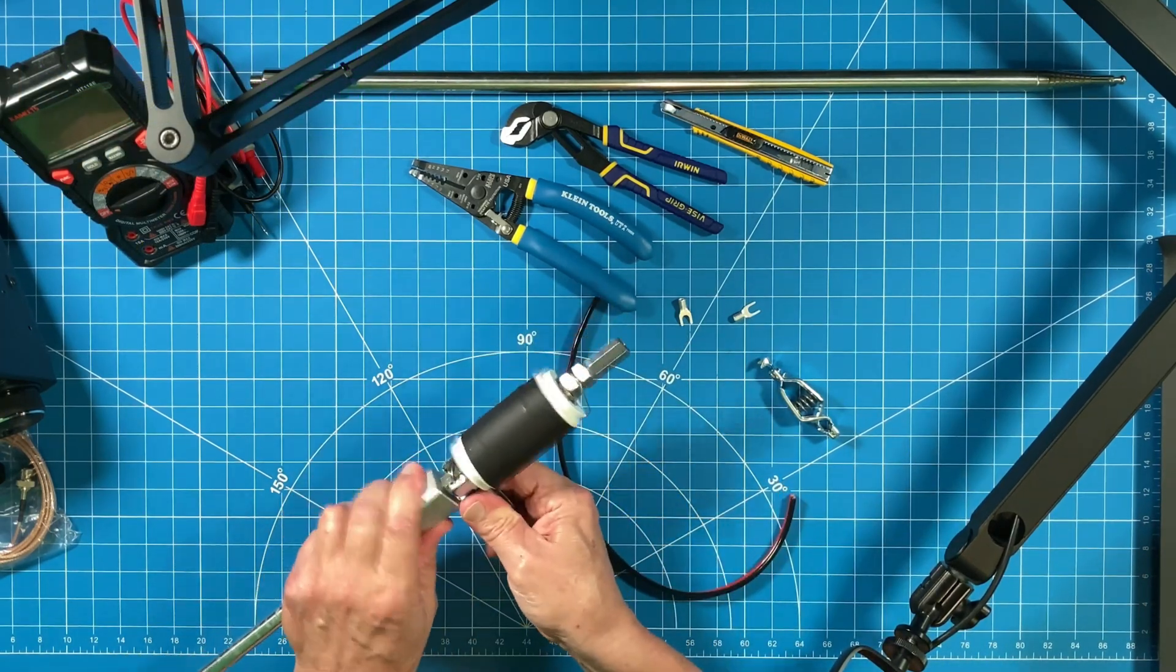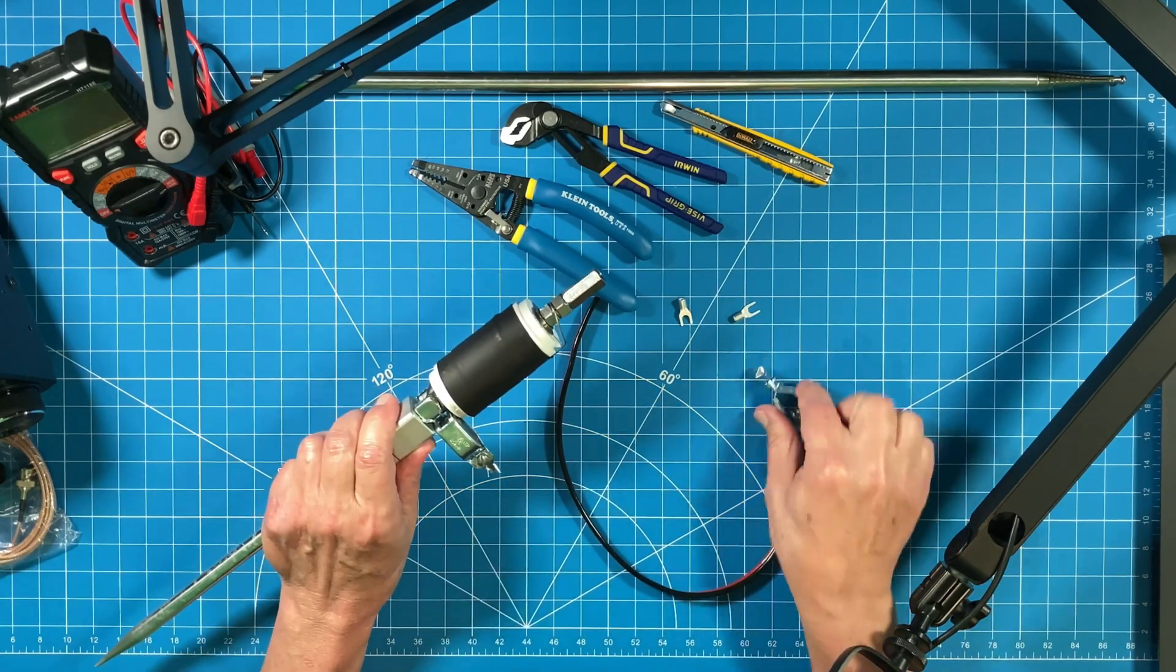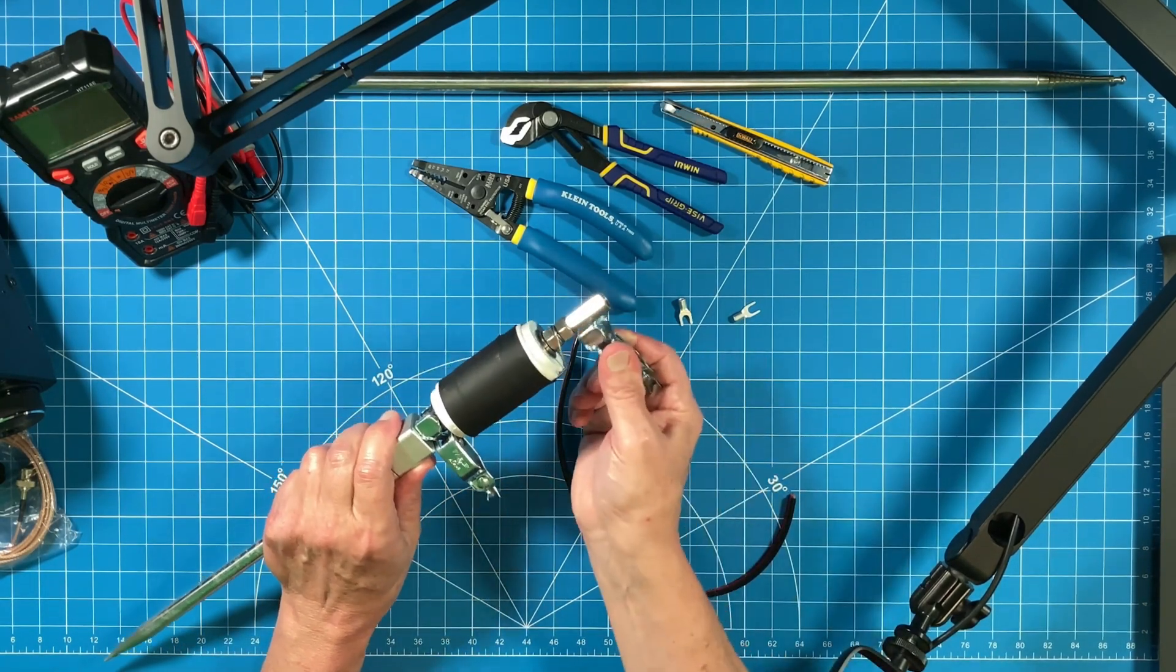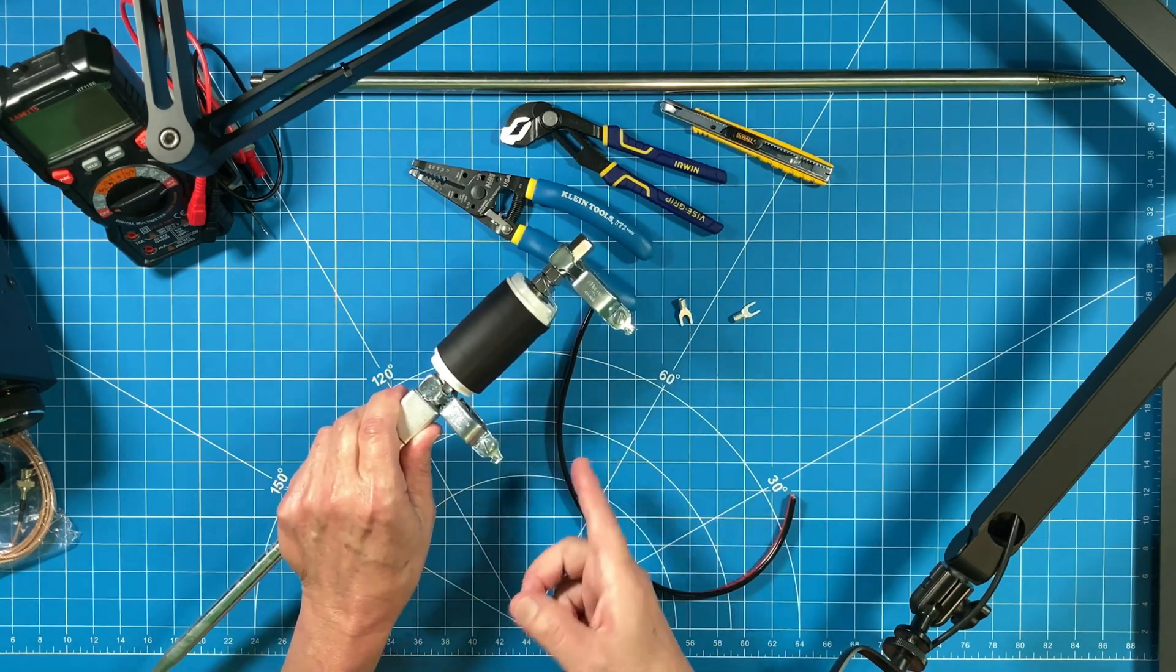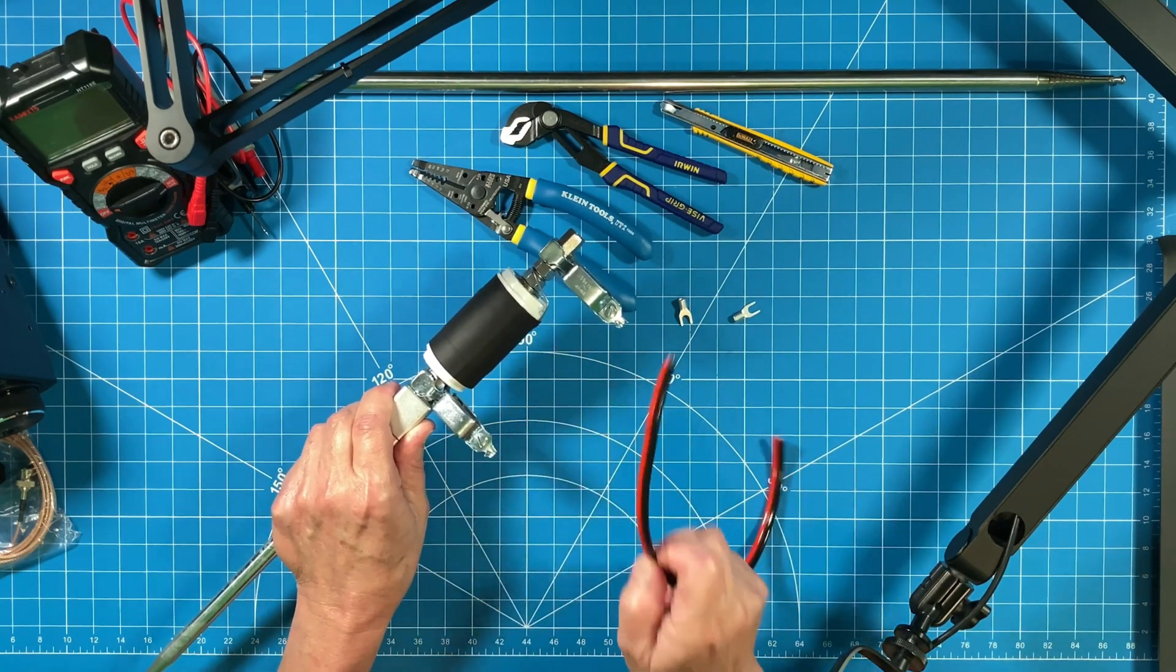This then would clip onto the bottom of the Sporty 40, this would clip to the top of the Sporty 40, and the cable is going to go between the two. So let's go ahead and start the process of getting the crimps on this wire.